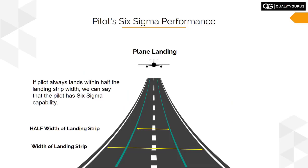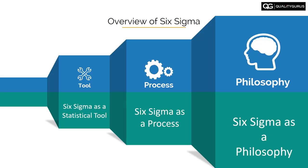Then we'll understand what Six Sigma is using a simple example of a pilot landing on a strip. Since this is an introductory course, we won't go into the details of how to calculate sigmas, but I'll give you a high-level overview using this example of a plane landing on a strip, which will clarify what Six Sigma means.